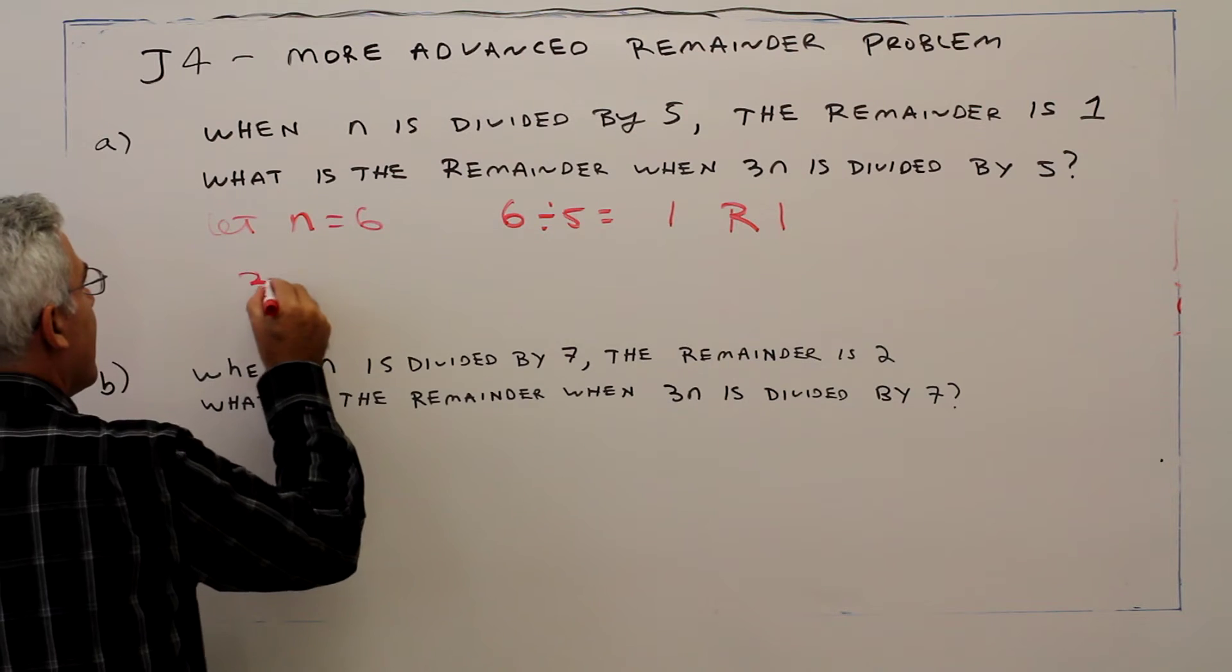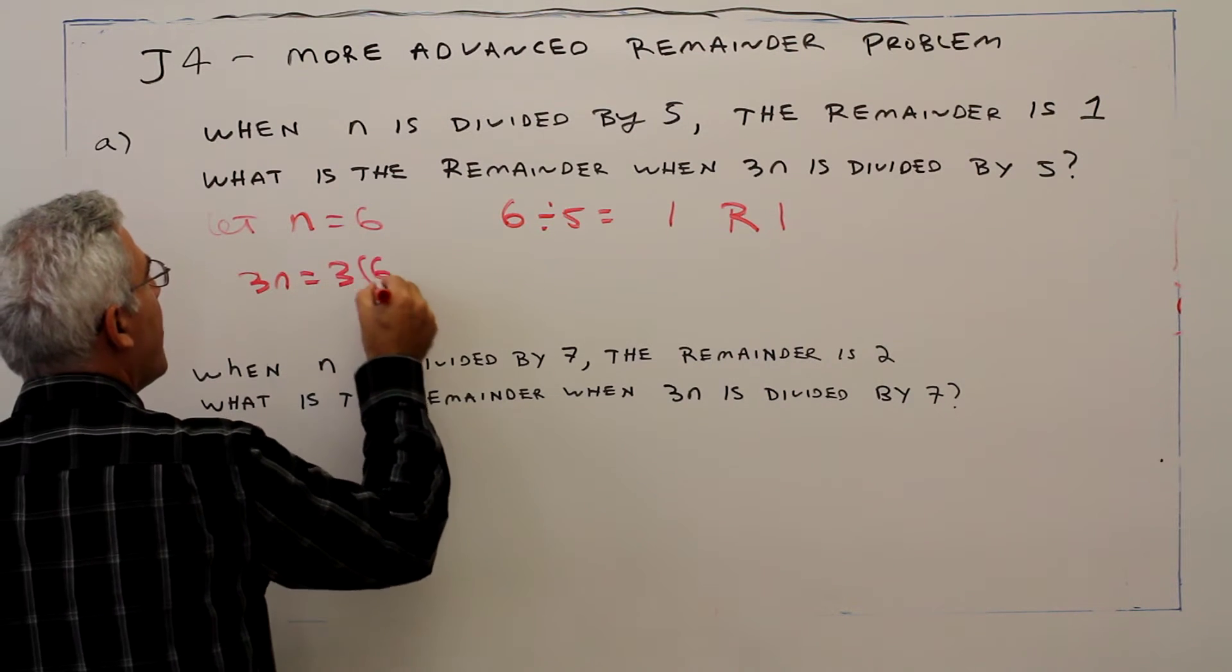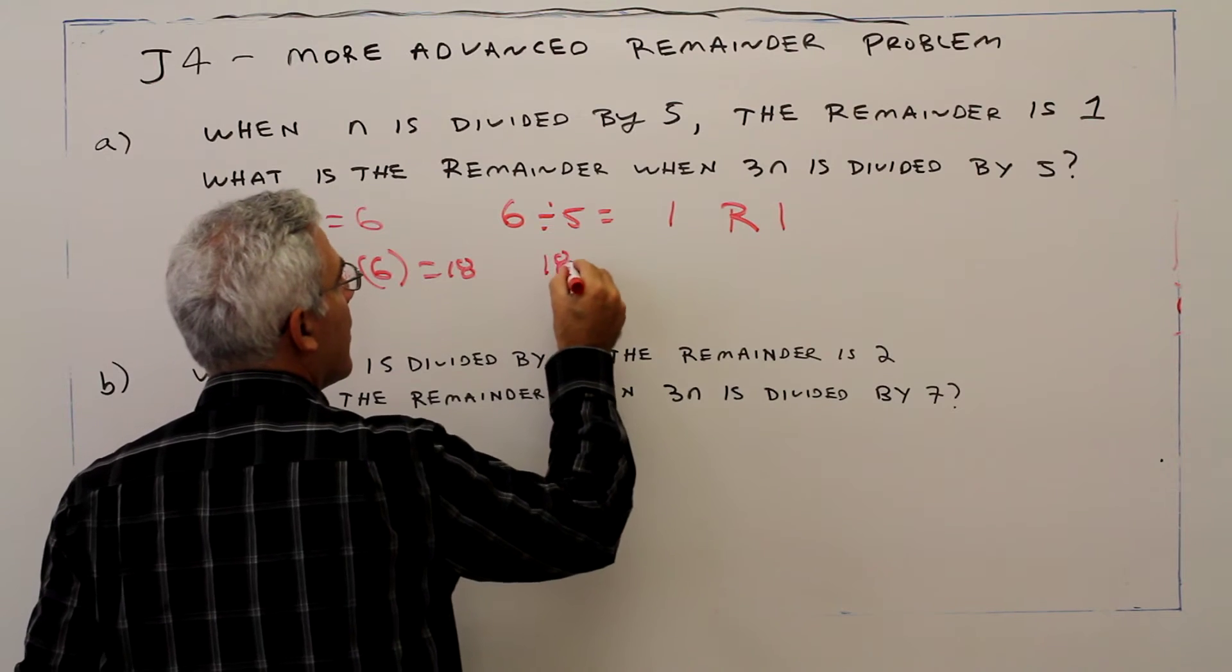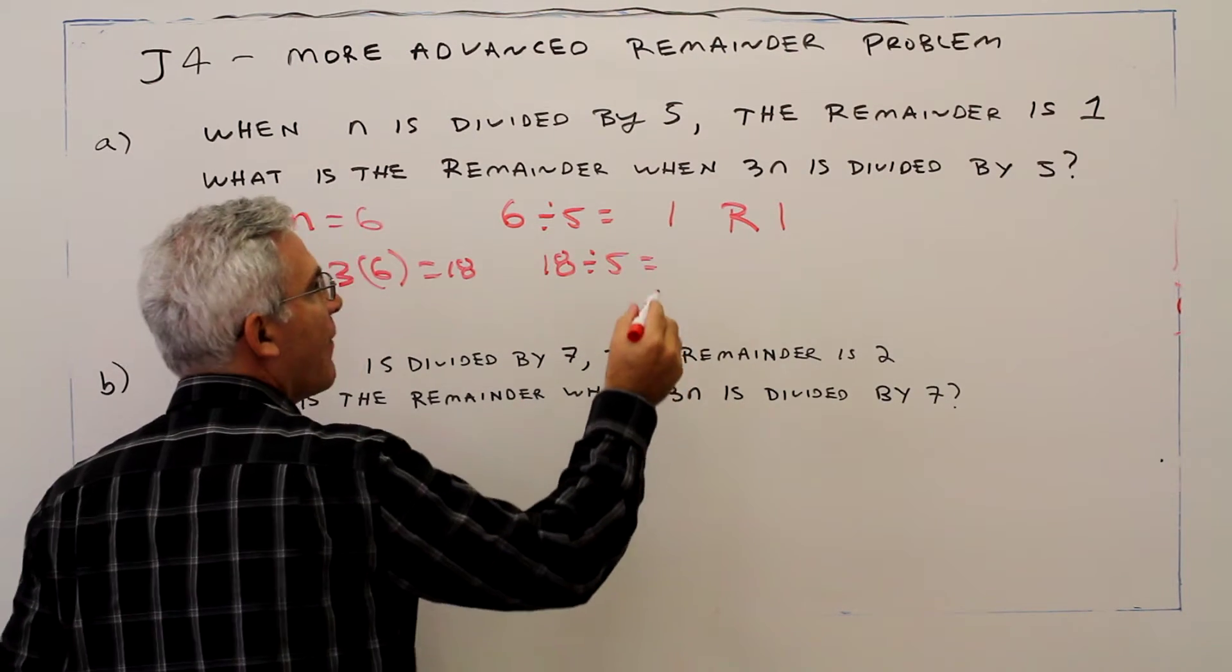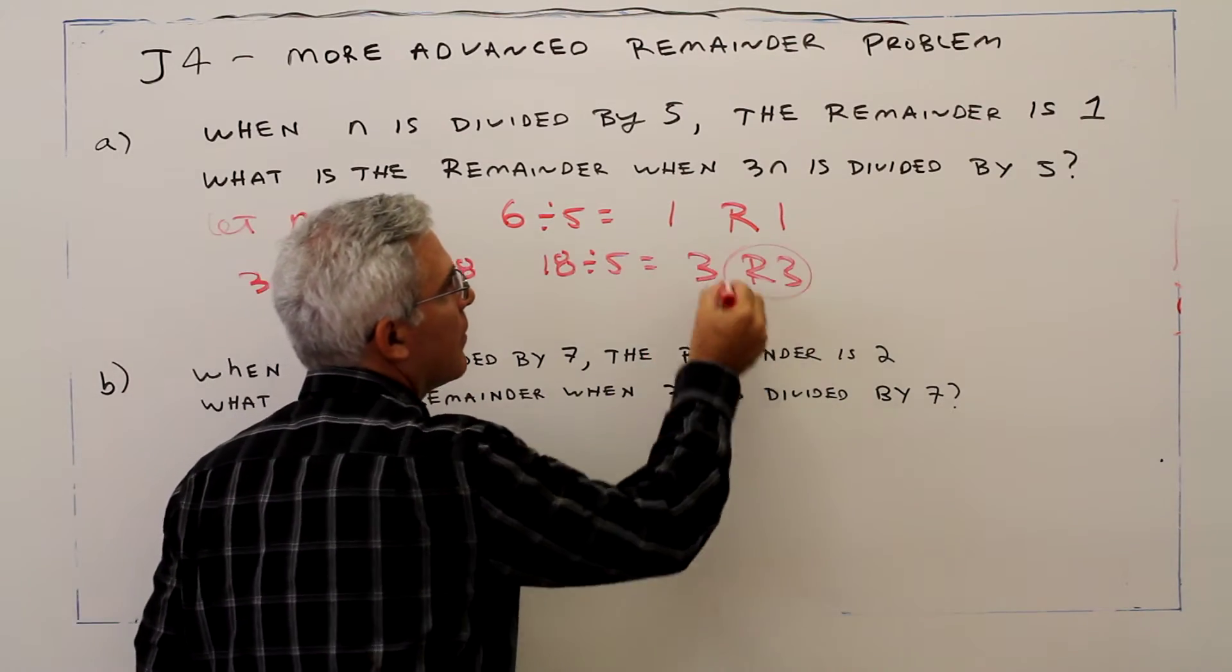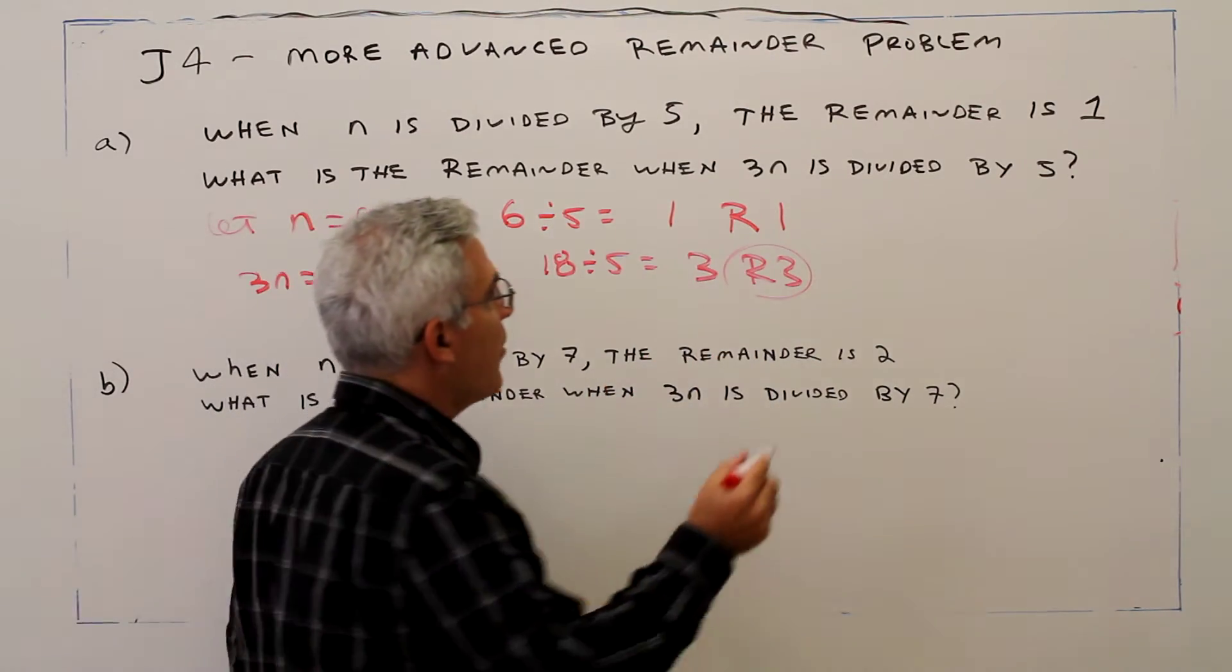Then 3n equals 3 times 6 equals 18. 18 divided by 5 is 3, remainder 3. So my answer is remainder 3.